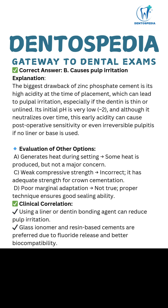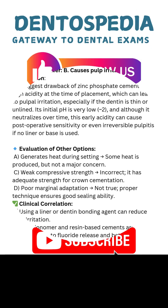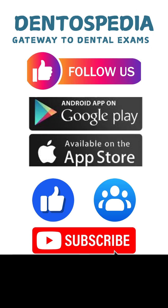Clinical correlation: using a liner or dentin bonding agent can reduce pulp irritation. Glass ionomer and resin-based cements are preferred due to fluoride release and better biocompatibility.